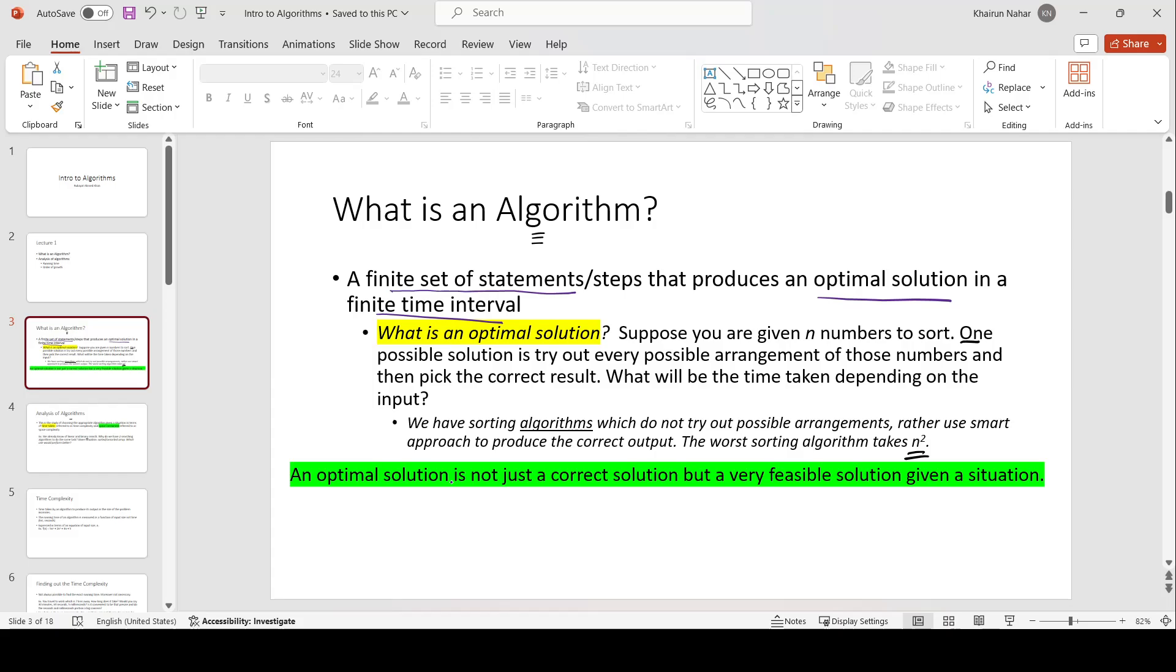An optimal solution is not just a current solution, but a very feasible solution in a given situation. Now what does this mean? Let's say we are given some numbers to sort. Let's say I have 5, 1, and 3. One possible solution to sort these numbers is to find out or list out all the possible arrangements or permutations.